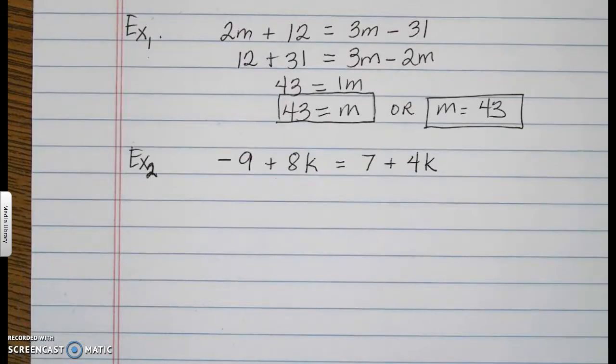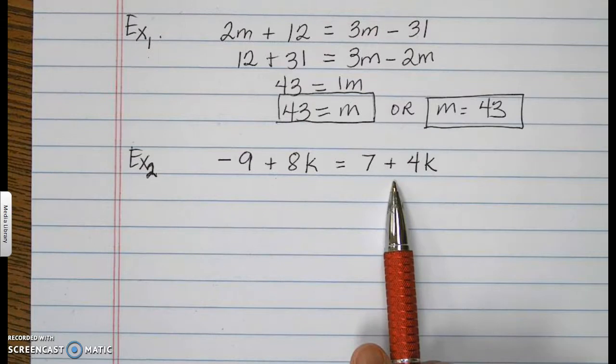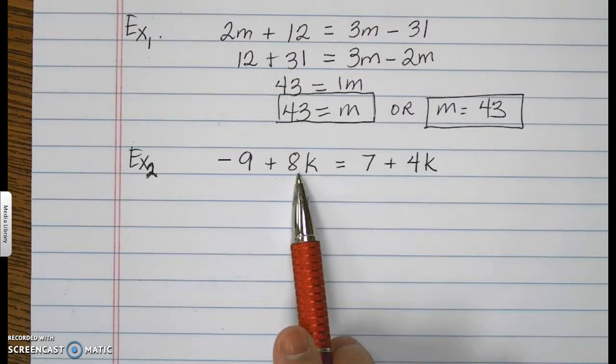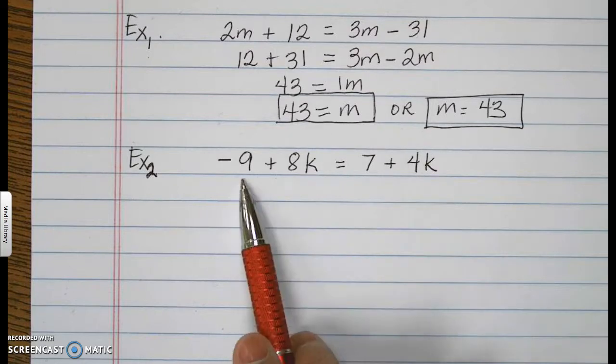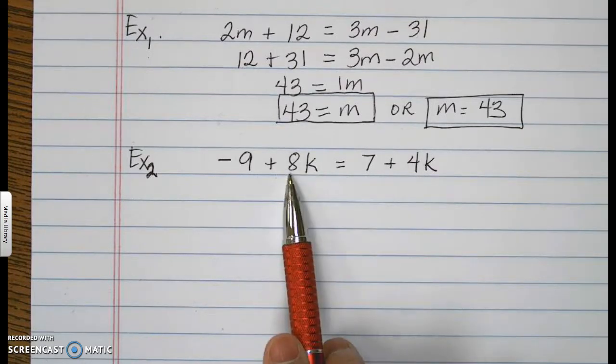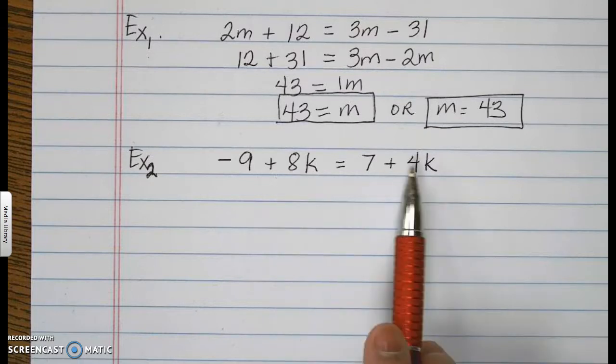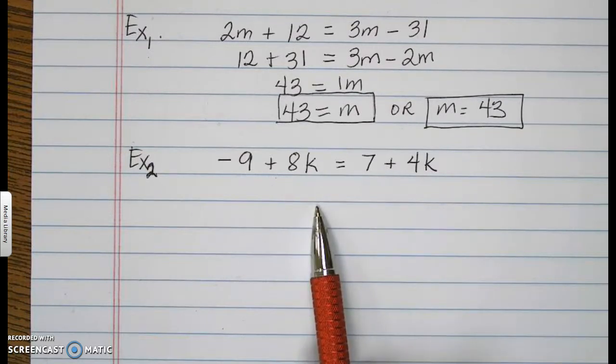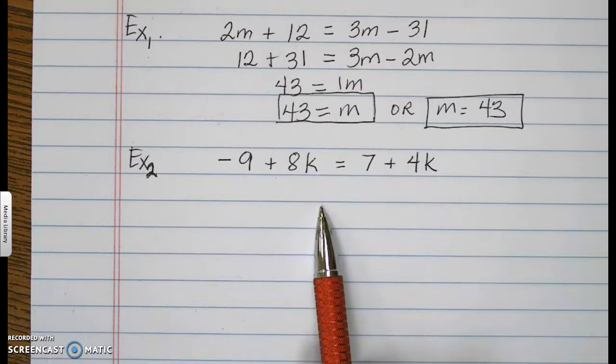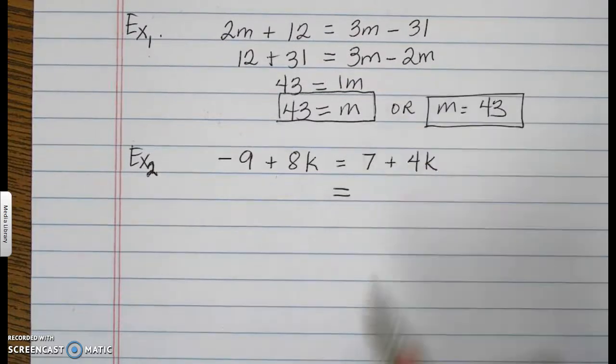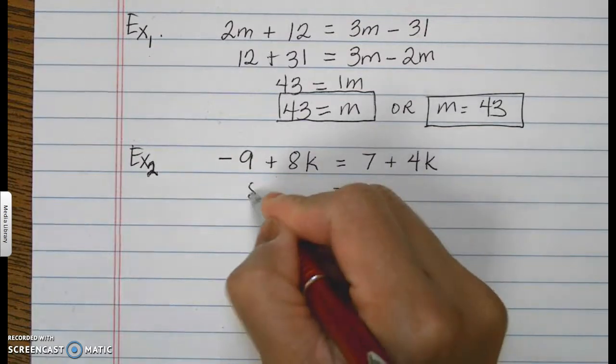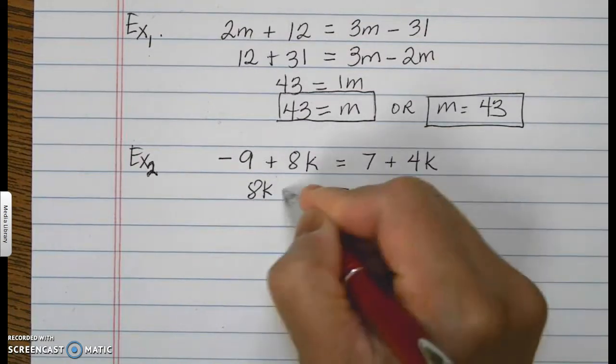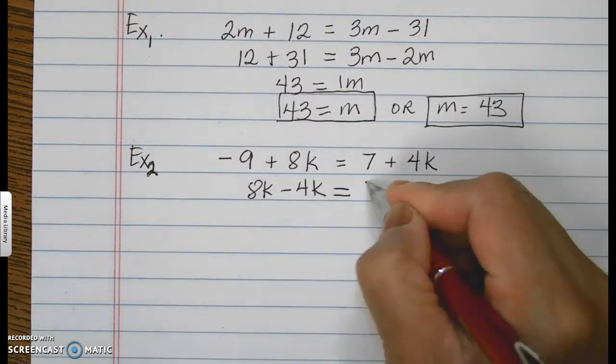Now, let's have example number 2. Example number 2 is negative 9 plus 8K equals 7 plus 4K. Once again, let's apply our strategy. I see these K's have to be together and the constants have to be together. But this has a bigger K. Therefore, I'm kind of thinking it's better for me to put this on the other side. Wherever side you choose to combine your like terms does not matter. We will arrive at the same answer. So, equal sign first to be able to identify your left and your right.